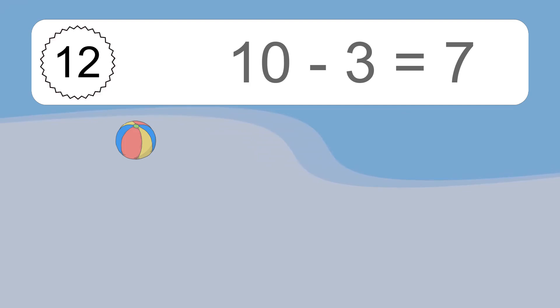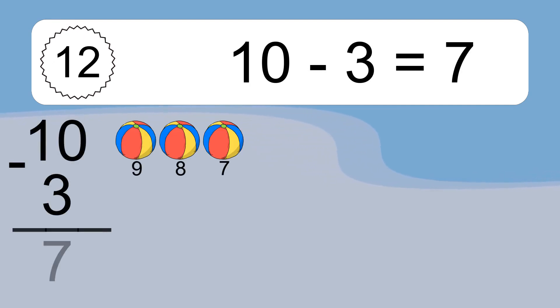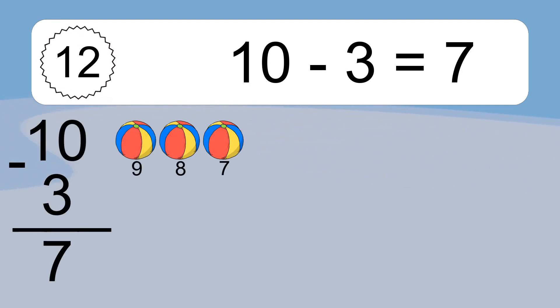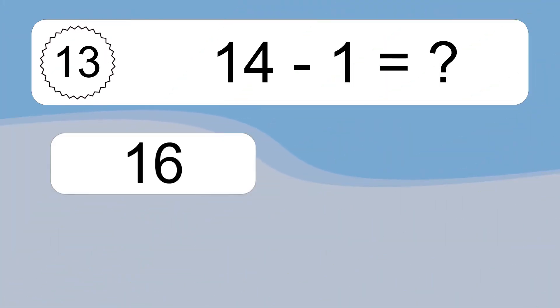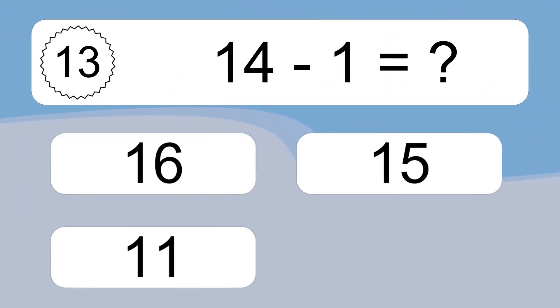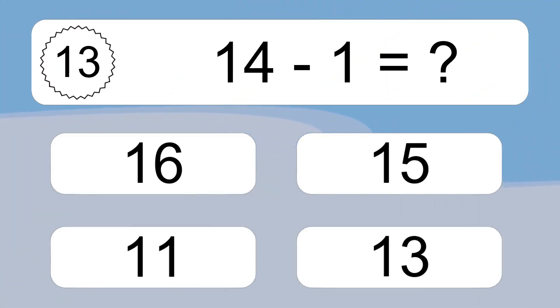10 minus 3 equals what? 10 minus 3 equals 7. Let's count it! 9, 8, 7.